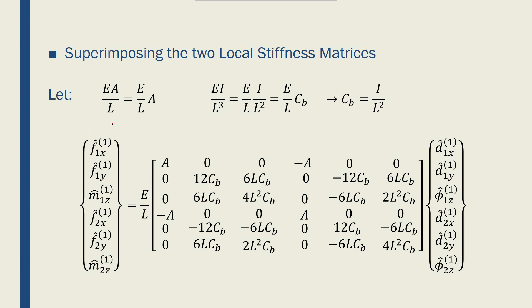What I would do first is I change the EA over L for a truss to E over L and factor the A out. And then convert the EI over L cubed to E over L times I over L squared.